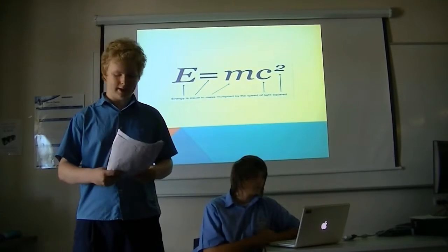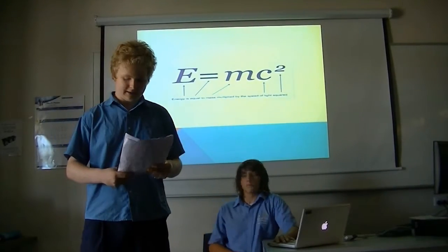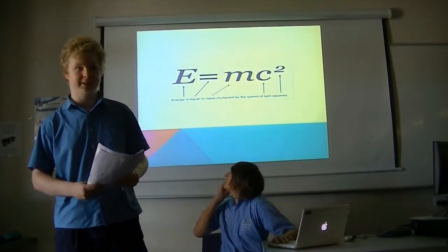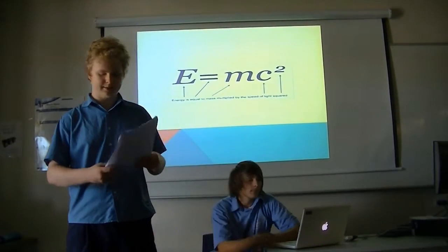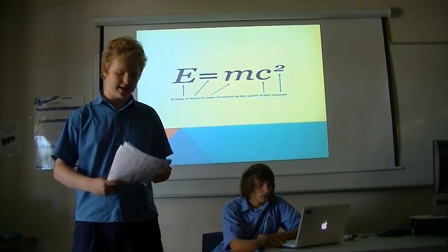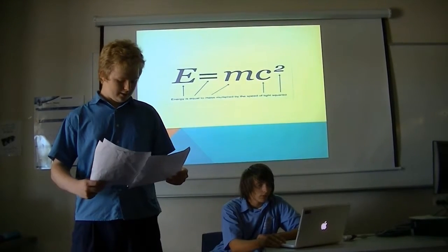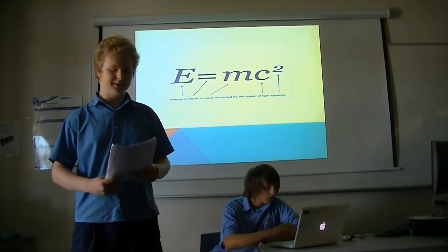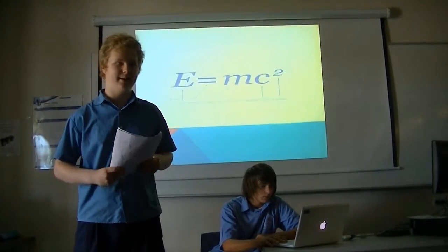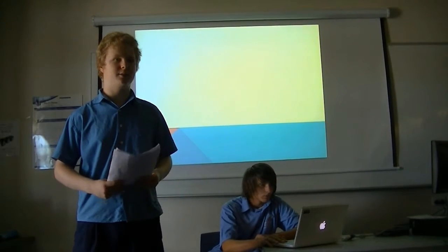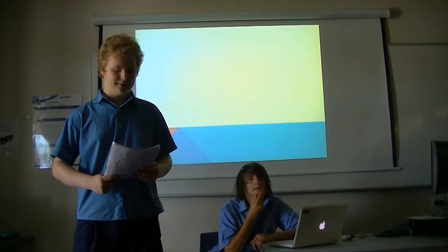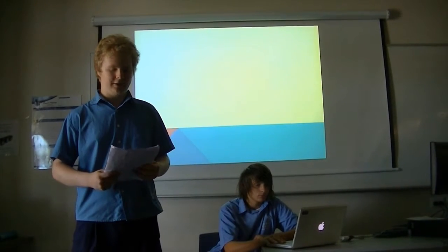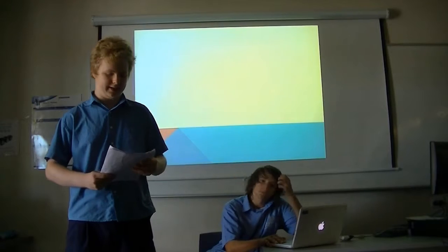E equals MC squared is actually quite simple to understand, however. A stationary object's E, or energy, is equal to its M, mass, times C squared, the speed of light, squared. This is the reason that we can build nuclear weapons, because it tells us that objects contain an immense amount of energy. C squared is a massive number, and any kind of mass therefore implies a huge amount of potential energy. And nuclear power is just harnessing this energy.